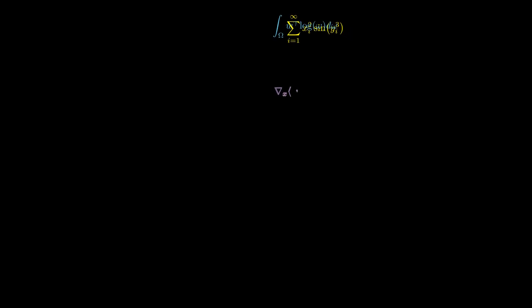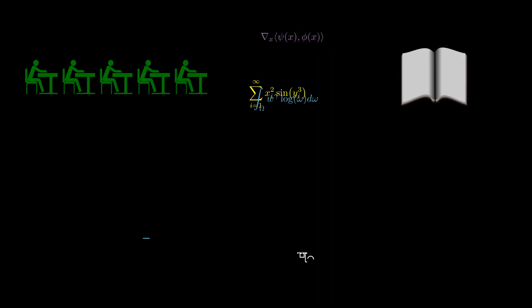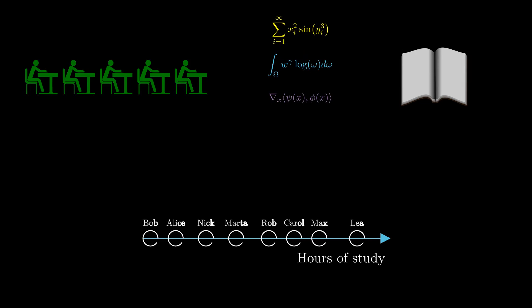Say we wanted to predict which students would pass an exam based on how many hours of study they did. If some students' results are already known, we can try to use them to predict the results of the remaining students. Logistic regression does exactly that. But before we can apply it, we have to convert our labels to zeros and ones. We will label every successful attempt as one and every failed attempt as zero.